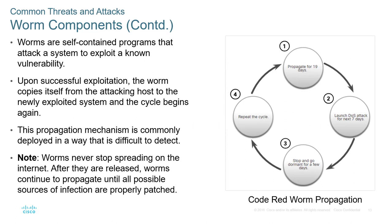With the Code Red worm, it took basically 19 days to propagate, then performed a DDoS attack, went dormant for a few days, and kept repeating the cycle. Worms never stop spreading on the internet — after release, a worm will propagate throughout anything it has access to unless it's found and eradicated. Once the worm has made its way onto a system, it will try its hardest to spread all over that system.